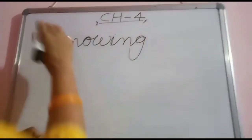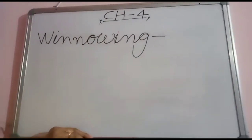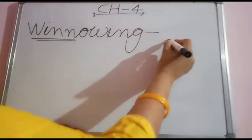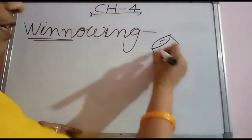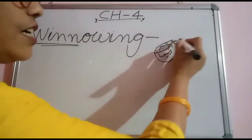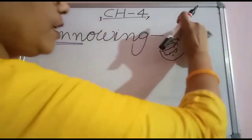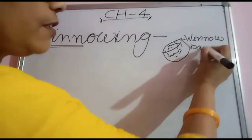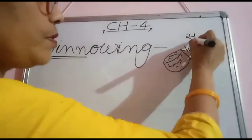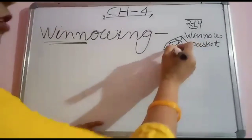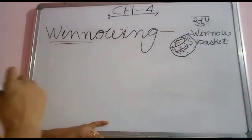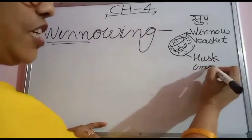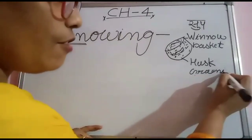Winnowing is a process of separation. Winnowing involves wind — wind is used in this process. Here is a winnow basket — your mama uses it at home, it is like a soup strainer. This winnow basket contains a mixture of husk and grains. Husk means the outer covering, and the mixture of husk and grains is separated by the process of winnowing.